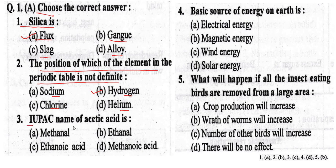Question No. 3. IUPAC name of acetic acid is: Option A: Methanol. Option B: Ethanol. Option C: Ethanoic acid. Option D: Methanoic acid. The correct answer is Option C, Ethanoic acid.